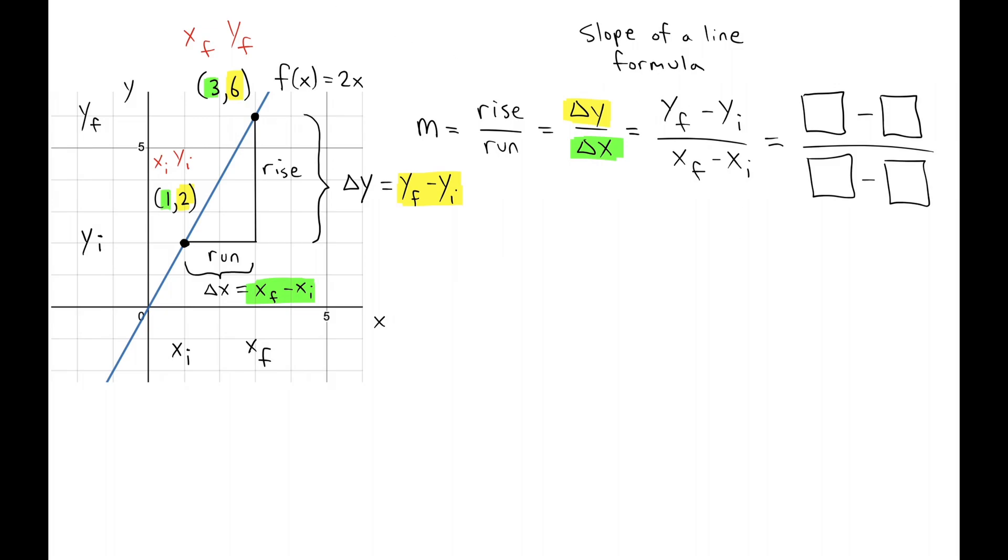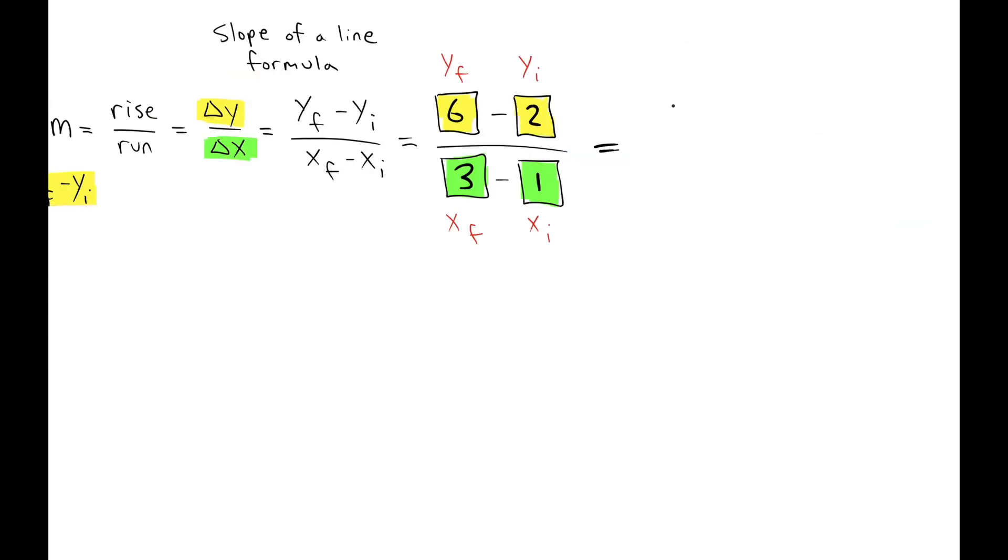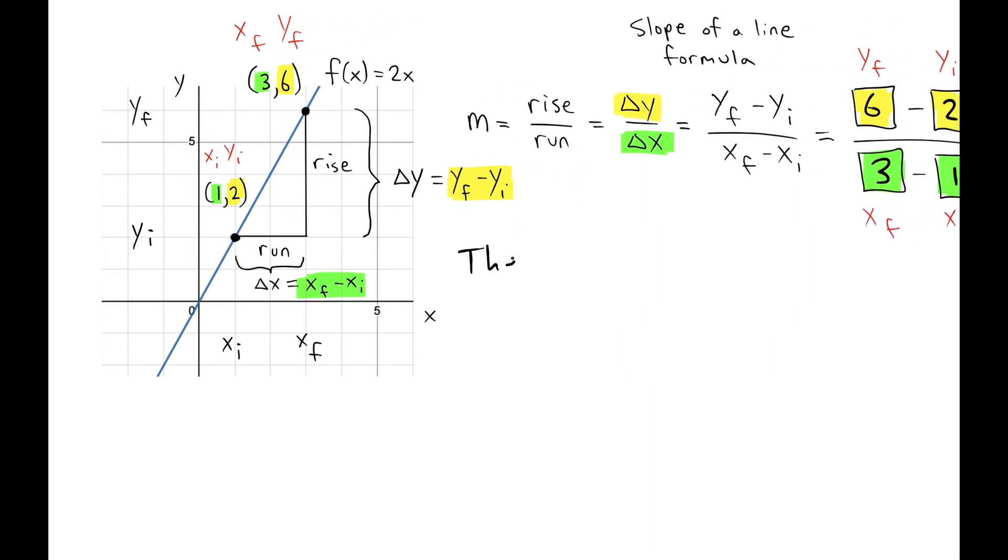What goes in here is the y final. This is going to be the y initial. That's the x final, the x initial. So we have six minus two divided by three minus one. And we get four over two, which is two. So the slope of the line is two.